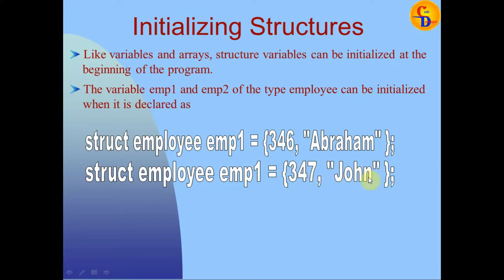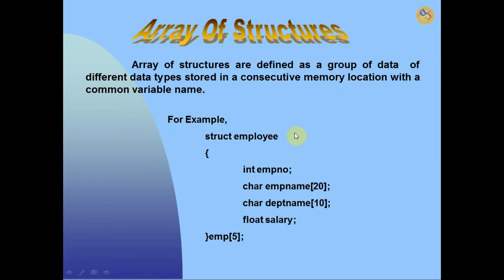Array of structures: arrays of structures are defined as a group of data of different data types stored in consecutive memory locations with a common variable name. Example: struct employee with data members, and a structure variable array of a given size.